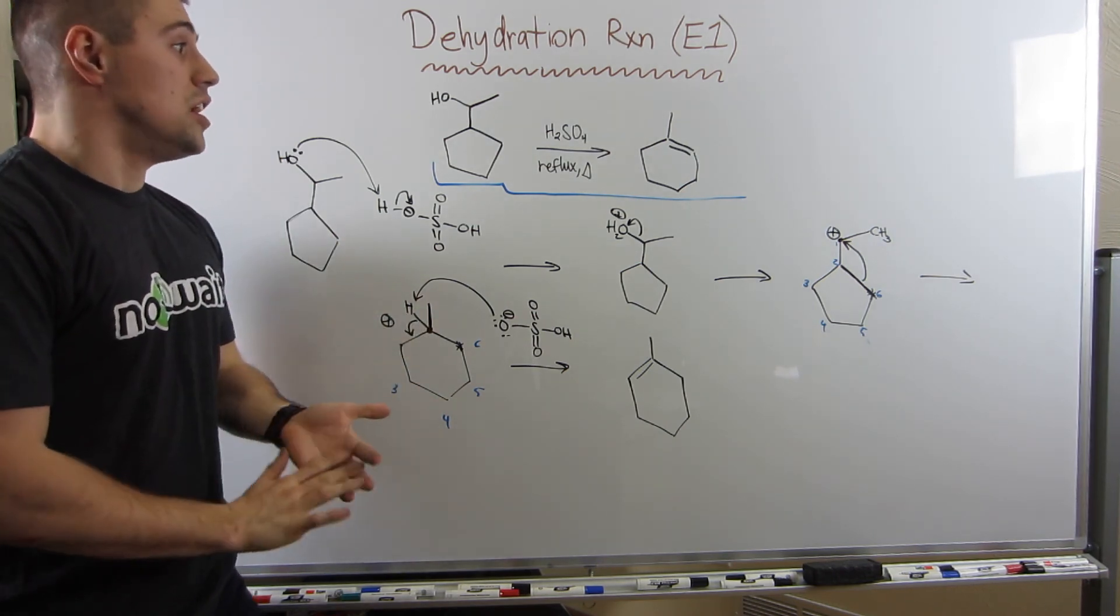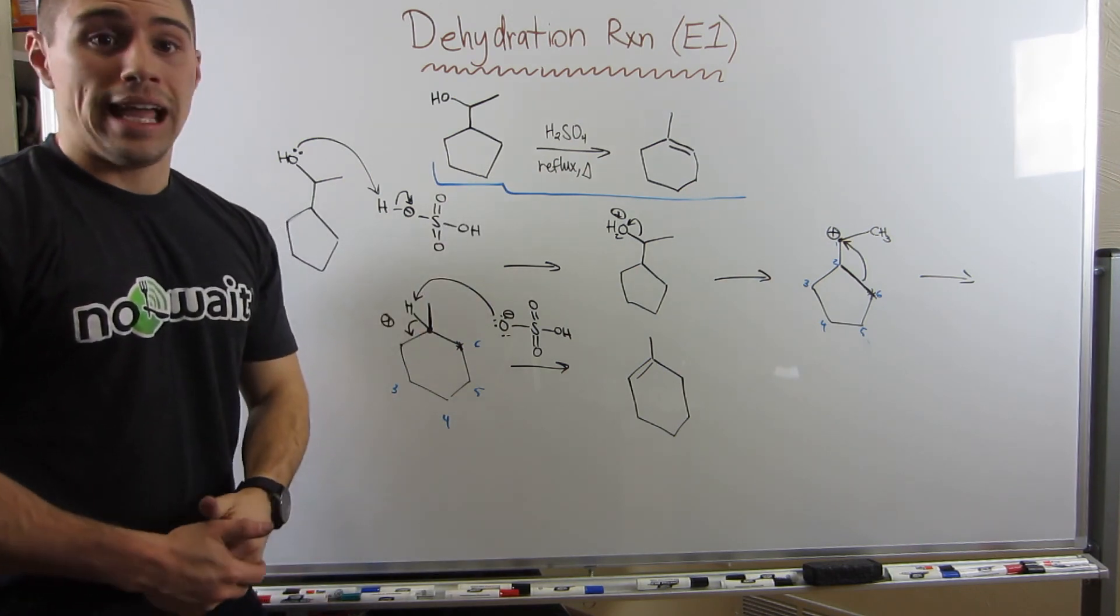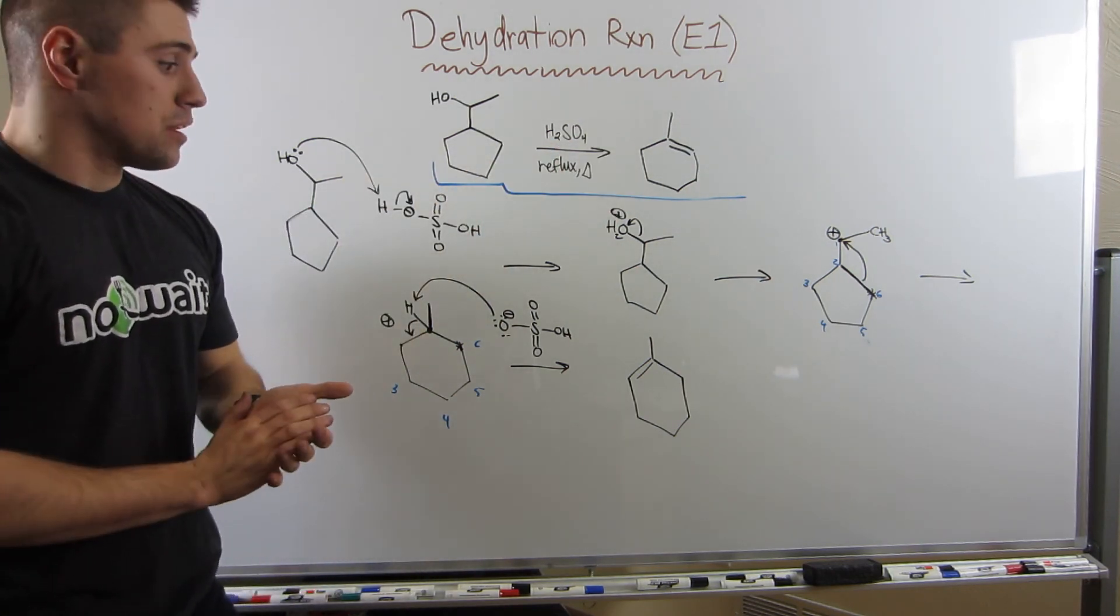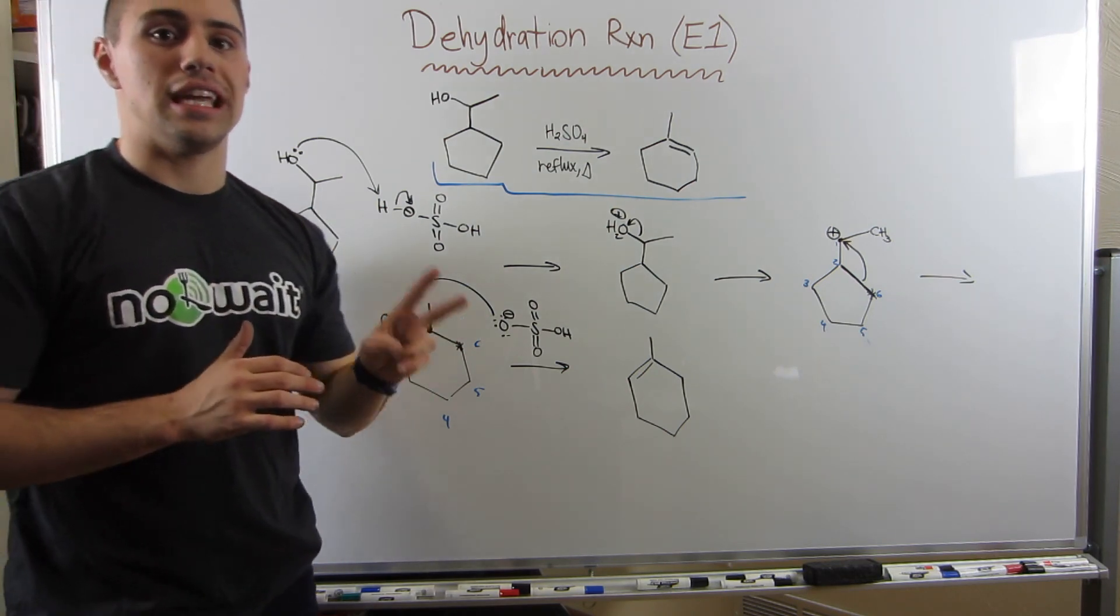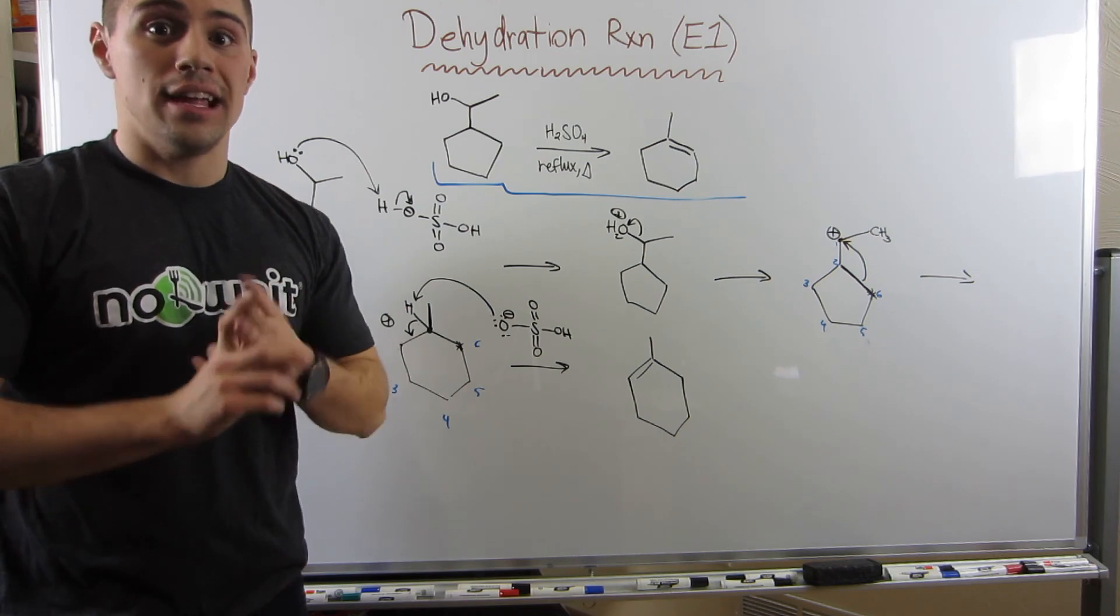So I want you guys to reproduce this on the worksheet on your own. You should be comfortable doing this. You should be able to go from a four-membered ring to a five-membered ring, and from this five-membered ring to a six-membered ring. So we have two more videos in this series. We're going to tackle ethers and epoxides, and then we're done.